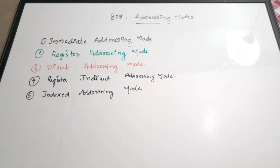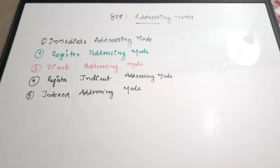There are basically five types of addressing modes for the 8051 microcontroller. First is immediate addressing mode, second is register addressing mode, third is direct addressing mode, fourth is register indirect addressing mode, and fifth is indexed addressing mode. These are the five important addressing modes of 8051.